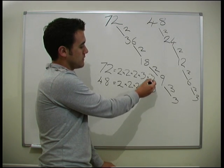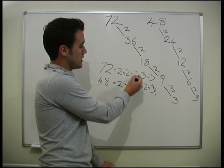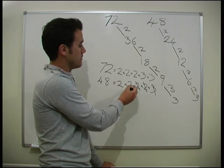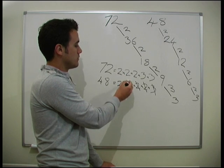So, there's a three here and a three there, so we can cross that three off. There's a two here and a two there. We can cross that two off. Two here and a two there. Cross that two off. Two here and a two there. Cross that two off.